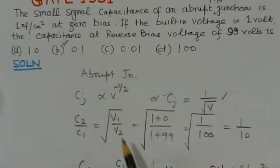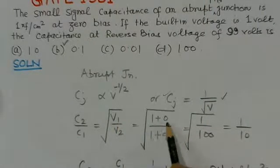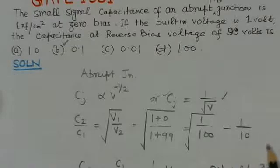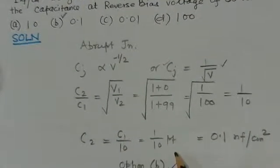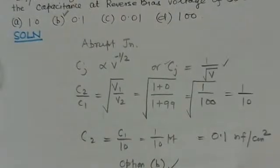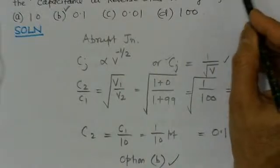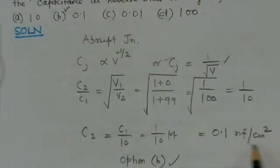Writing C_J2 over C_J1 equals the square root of V1 over V2. Here V1 is the built-in potential plus zero bias, equal to 1 volt, and V2 is the built-in potential plus 99 volts, equal to 100 volts. This gives a ratio of 1 over 10, so C_J2 equals C_J1 divided by 10. Since C_J1 is 1 nanofarad per centimeter squared, C_J2 equals 0.1 nanofarad per centimeter squared, which is option B — the correct answer.